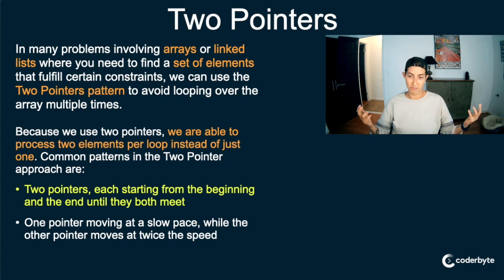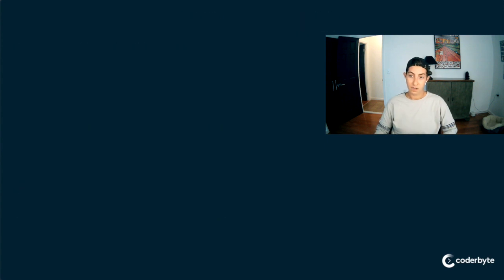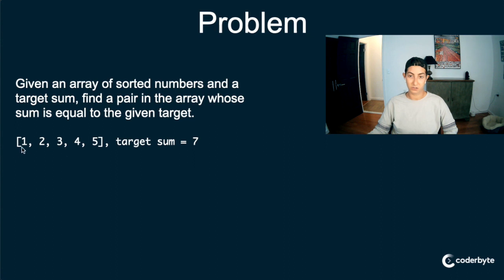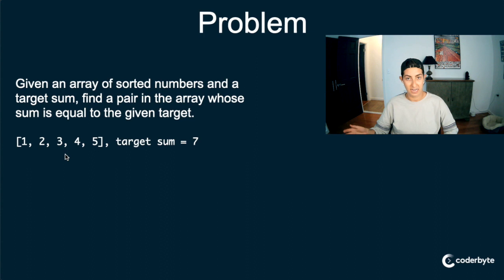Today we are going to be focusing on that first pattern where you have two pointers — one at the beginning and one at the end — and they converge towards the middle. The problem this week: given an array of sorted numbers and a target sum, find a pair in the array whose sum is equal to the given target. For example, given the array [1, 2, 3, 4, 5] and a target sum of 7, the answer is the pair 2 and 5.